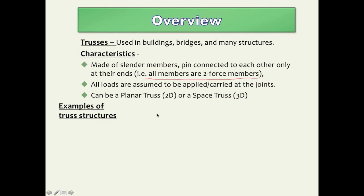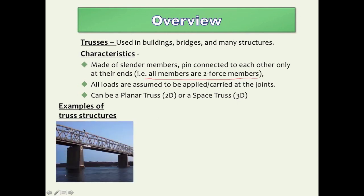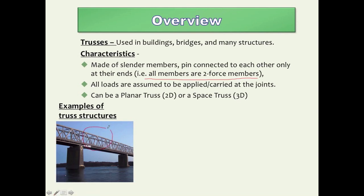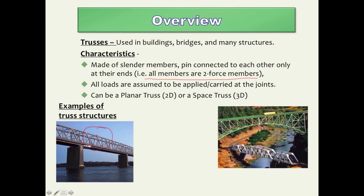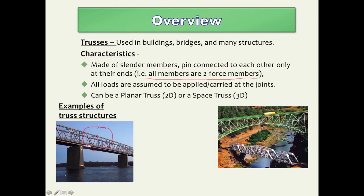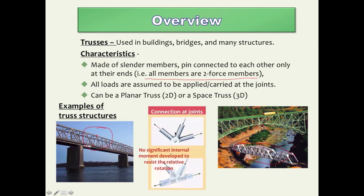Let's show a few examples of typical truss structures. Trusses are very common in building bridges. For instance, this building is made of trusses, and as you can see, all members are straight, connected at the two ends to each other. This is another type of truss structure — a bridge with a very long span. It is very important to know that the connections at the ends of the members are such that they do not carry any significant internal moment.